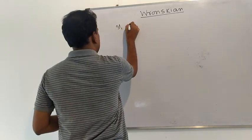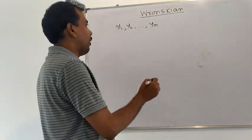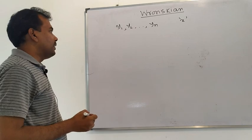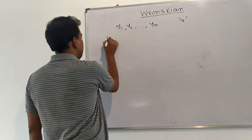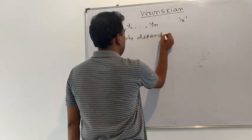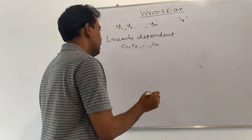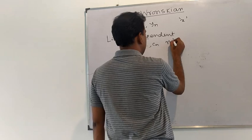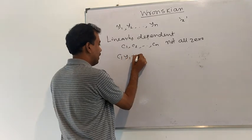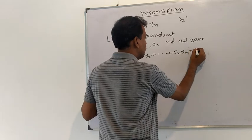Suppose y1, y2, ..., yn are n functions of a single variable x. The set of functions y1, y2, ..., yn is said to be linearly dependent if there exist scalars c1, c2, ..., cn — scalars meaning real numbers — not all zero, such that c1·y1 + c2·y2 + ... + cn·yn equals the zero function.